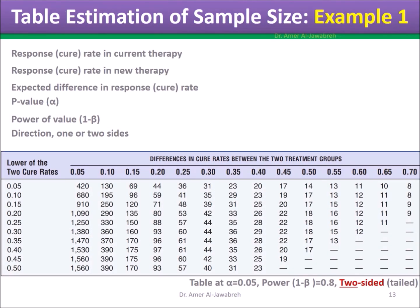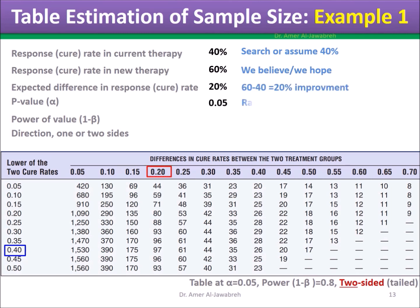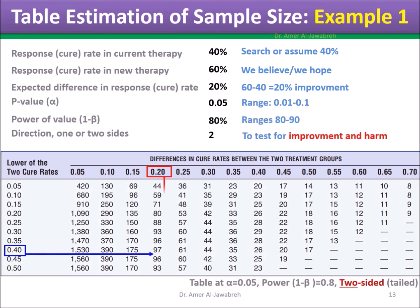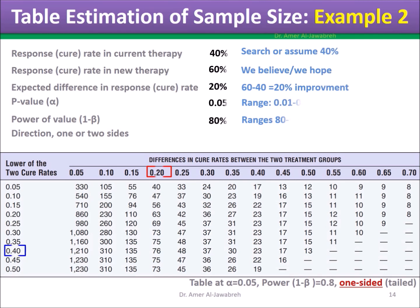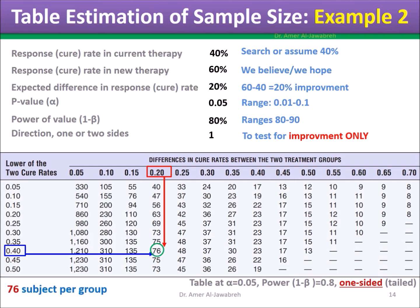Table estimation of sample size. Example 1: cure rate in current therapy 40%, cure rate in new therapy 60%, difference 20%, p-value 0.05, power of study 80%, direction two-sided — sample size is 97 subjects per group. Example 2: same as Example 1 but interested in improvement only, thus one-sided. A different table is used and the sample size is 76 subjects per group.